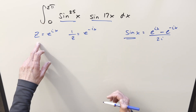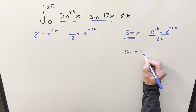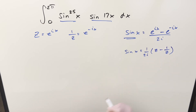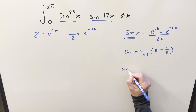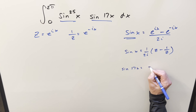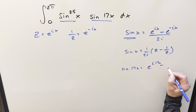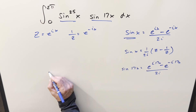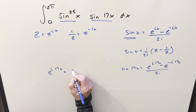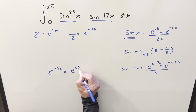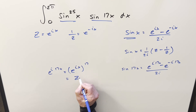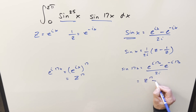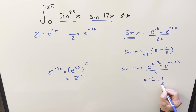We can rewrite our definition of sine this way. We can bring the 1/(2i) in front, and then this is just going to become z minus 1/z. For sin(17x), using this definition, it's just e^(i·17x) minus e^(−i·17x). With exponent properties, e^(i·17x) can be written as (e^(ix))^17, which is just z^17. So rewriting it, we'll have z^17 minus 1/z^17.